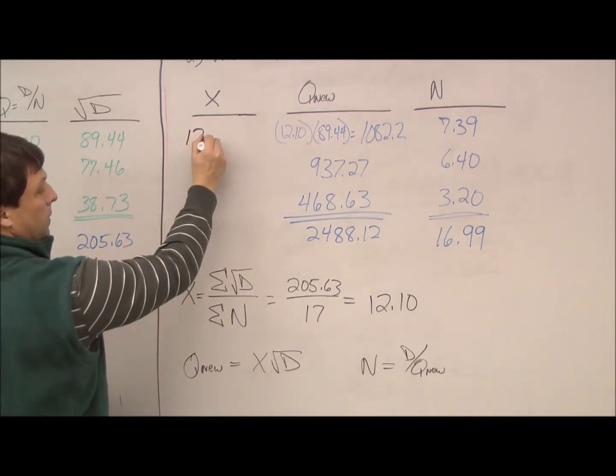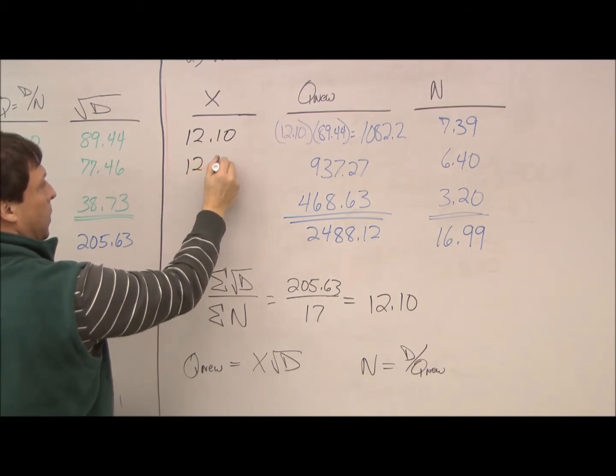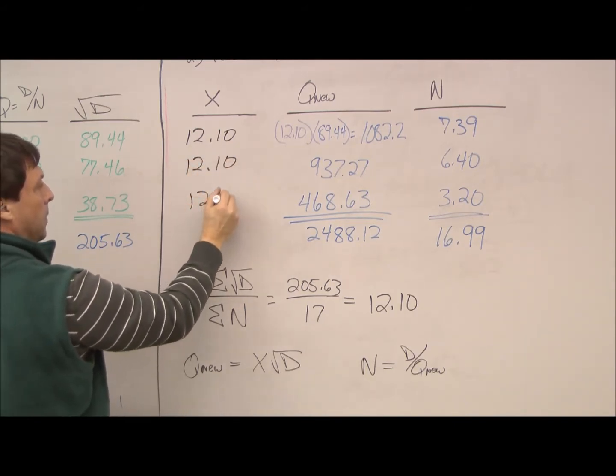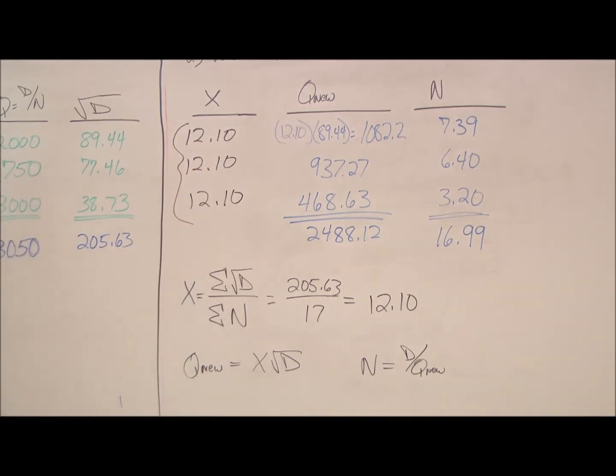So, for all of these, it would be 12.1. So, this X is the same for all three.